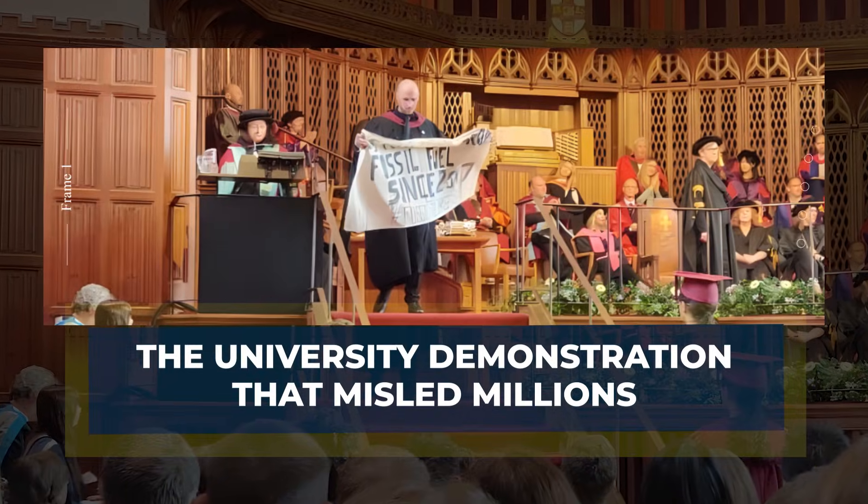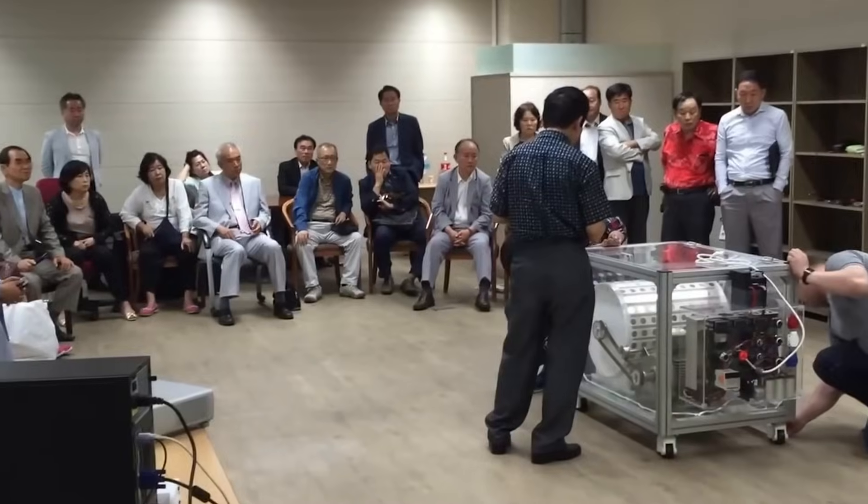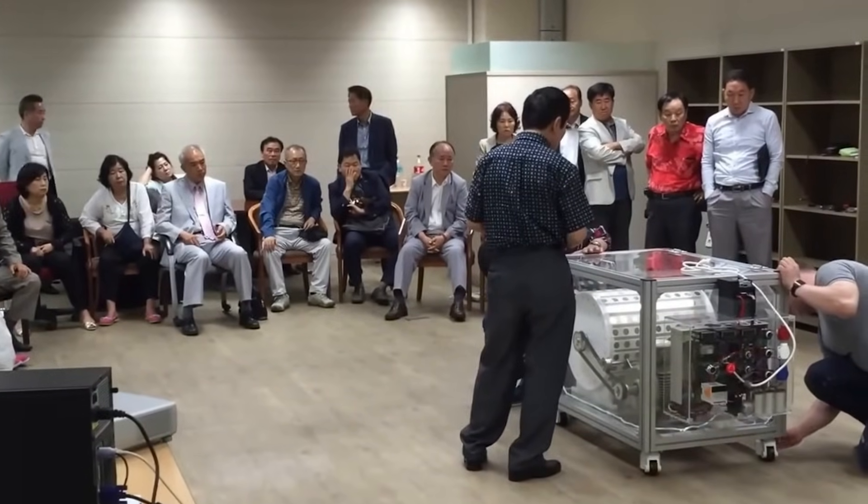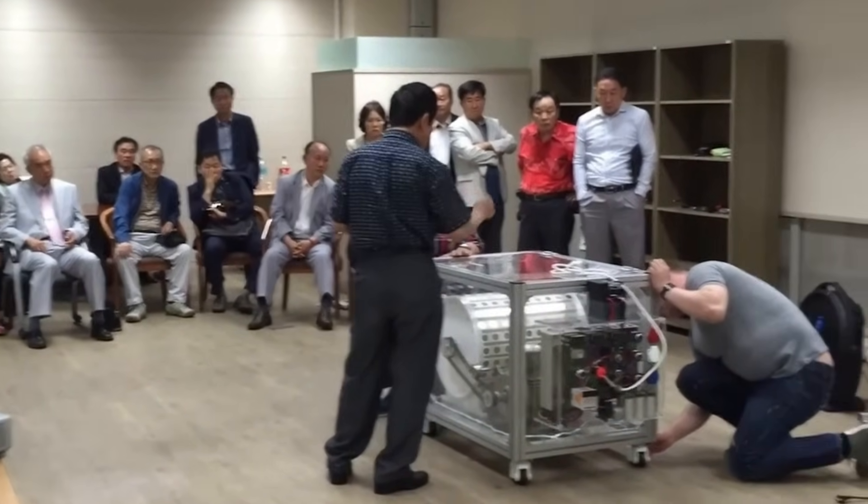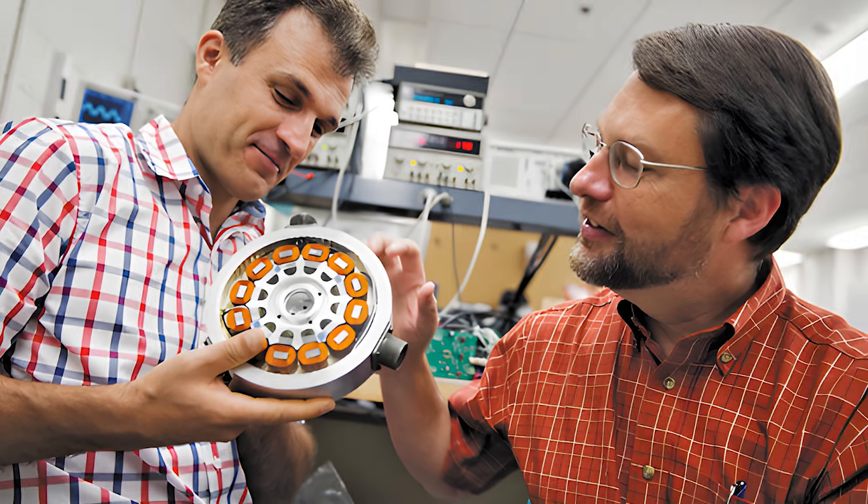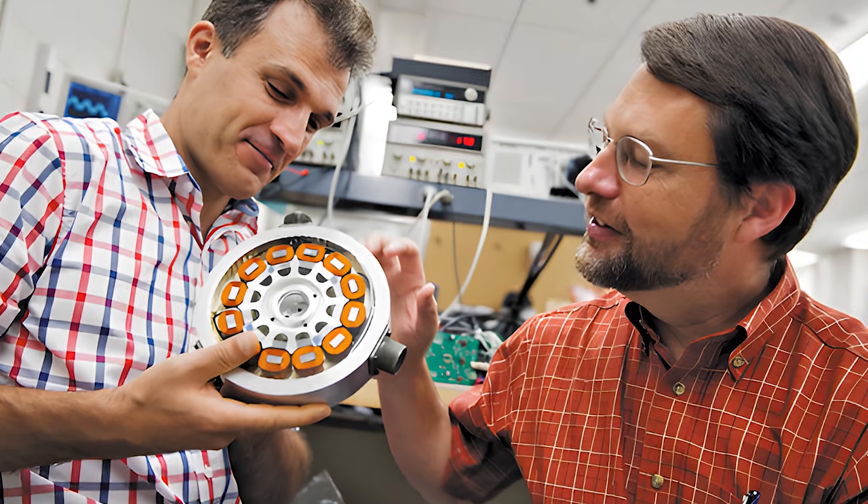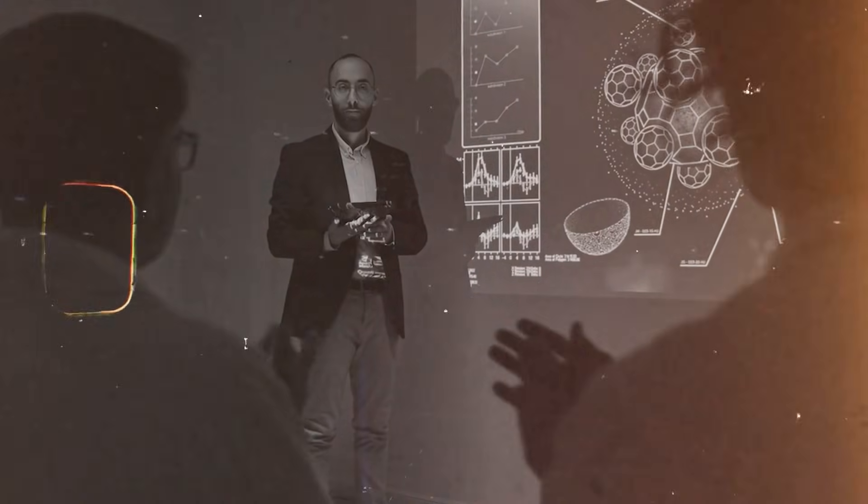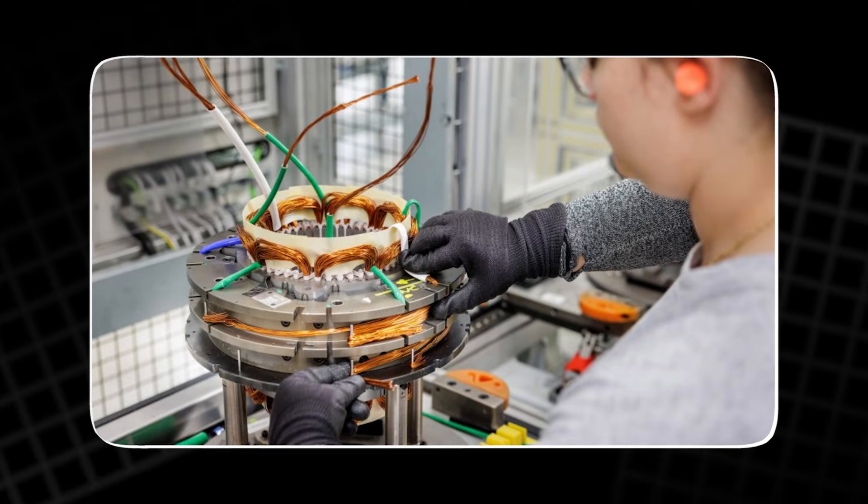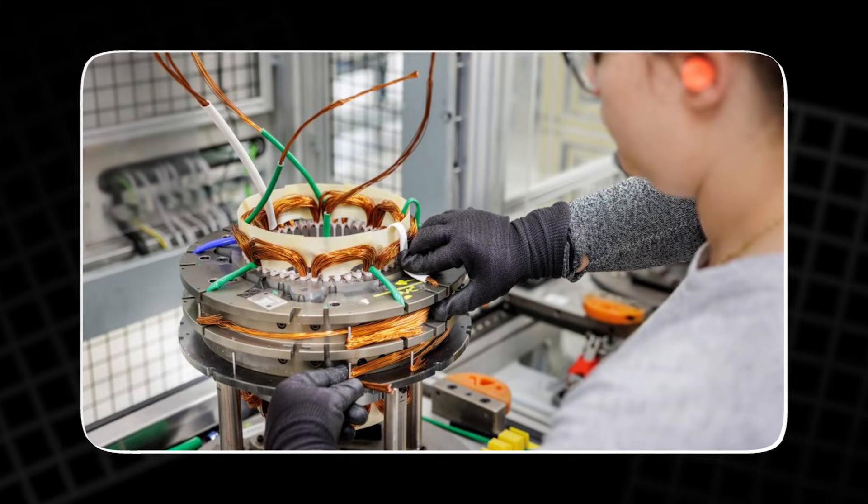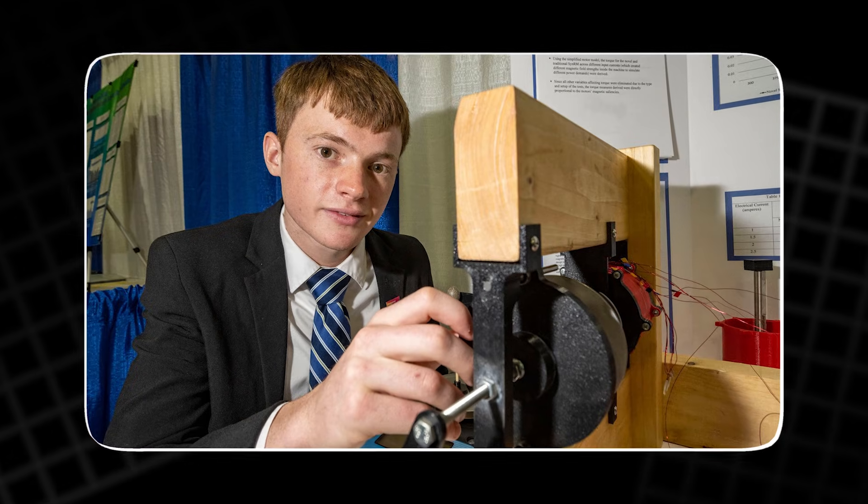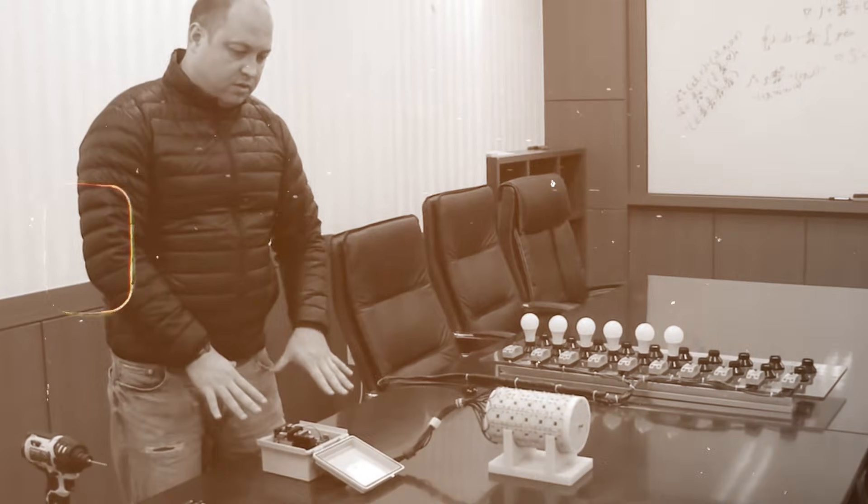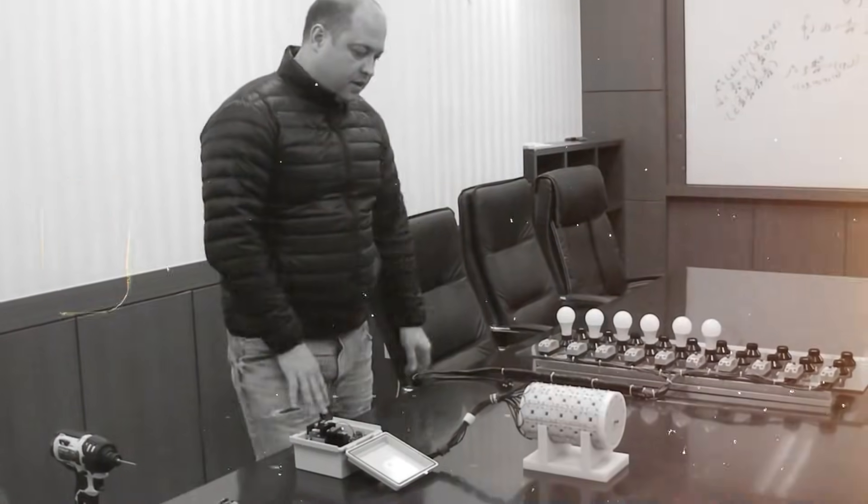The university demonstration that misled millions. One video became extremely popular because it appeared to show a working magnetic motor inside a respected university building. The environment looked official. People in the audience clapped. The inventor stood next to the machine with confidence, moving with the calmness of someone who believed he had changed history. For many viewers, this was the final proof.